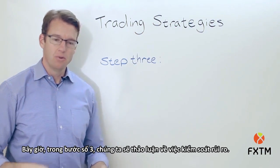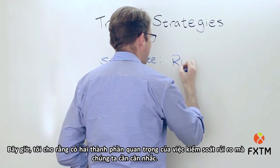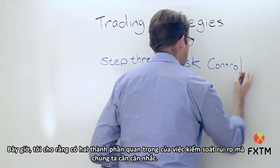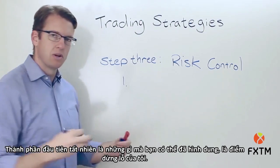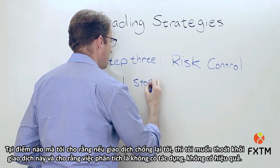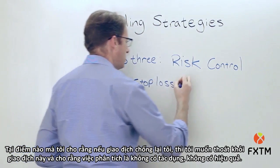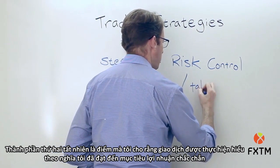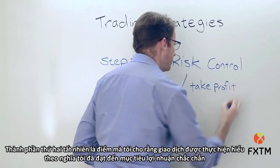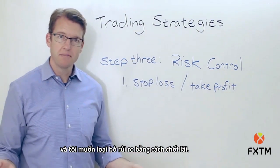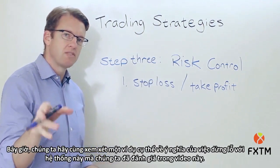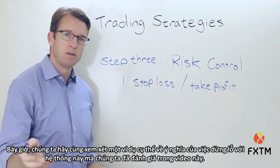In step number three, we're going to talk about risk control. There are really two important components of risk control that we need to think about. The first one, of course, is where's my stop loss? At what point do I assume that if the trade has gone against me, I want to get out of this trade and assume the analysis is dead? The second level is where do I think that the trade is done in the sense that I've reached a likely profit objective and I want to remove my risk by taking my profits off the table?